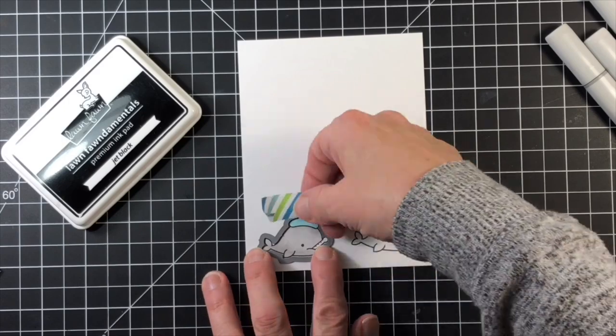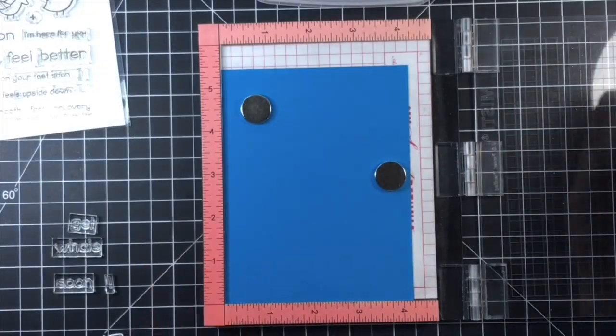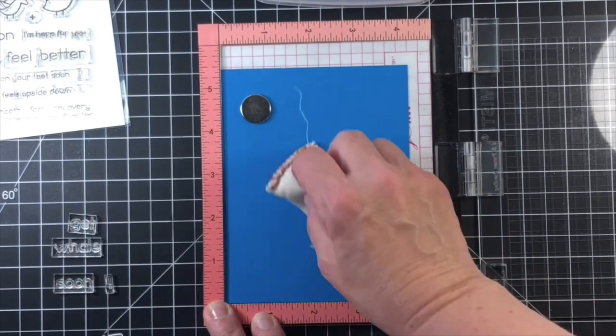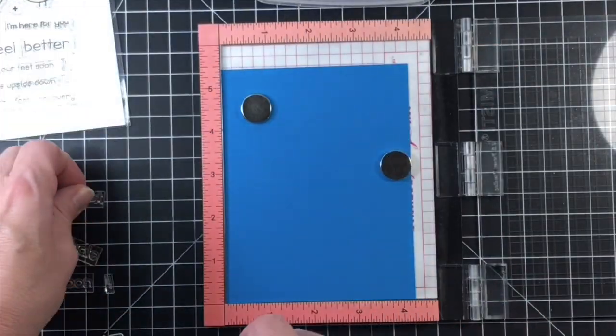Now I usually tape my die cut to the image then die cutting just to make sure it doesn't slip during cutting, but I am going to go off camera and die cut the whale with my Gemini Junior and then set the image aside.